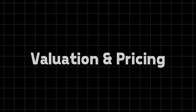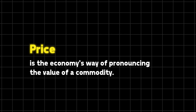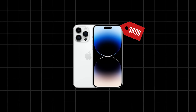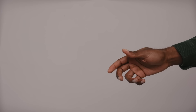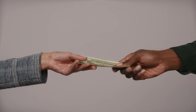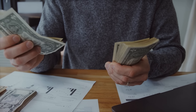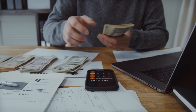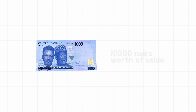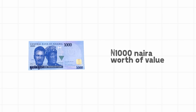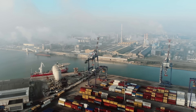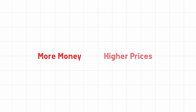Valuation and pricing. Price is the economy's way of pronouncing the value of a commodity. The price of an iPhone, for example, is an expression of the value of the phone. Since money is the apparatus through which exchange takes place, the amount of money people decide to hold at any point indicates how much value they wish to have in liquid form. The more money in the economy translates to higher prices.